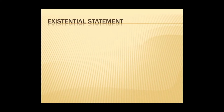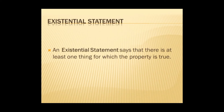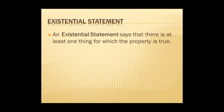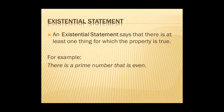Next is the existential statement. An existential statement says that there is at least one thing for which the property is true. For example: there is a prime number that is even. To identify an existential statement, we look for the words 'there is'.